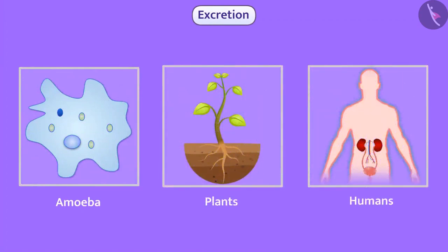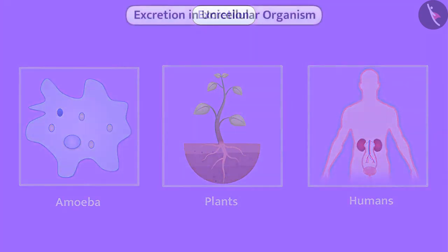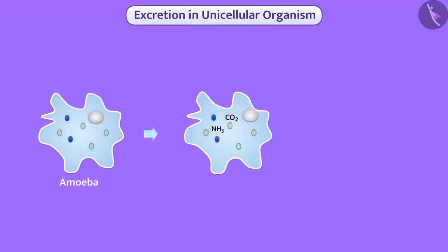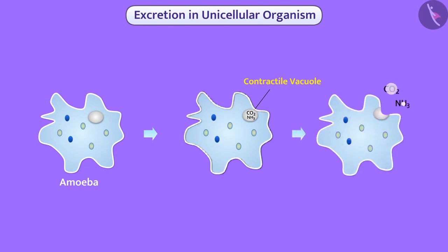A life process in which harmful metabolic waste gets removed from the body is called excretion. In the cytoplasm of some unicellular organisms, waste such as carbon dioxide and ammonia collects into the contractile vacuole and is excreted outside the cell surface by diffusion.